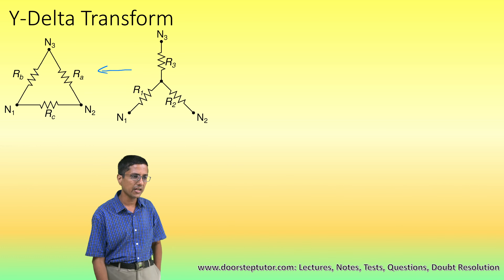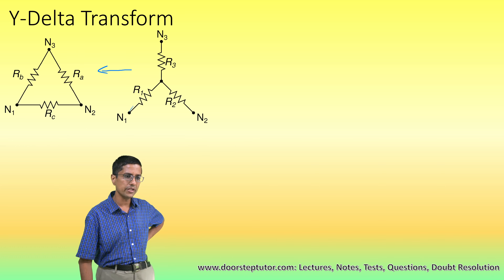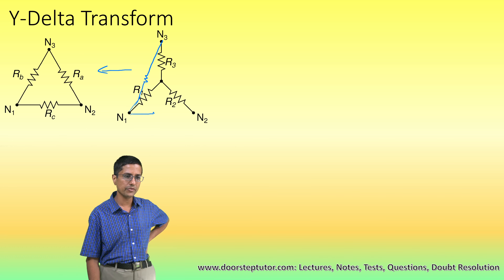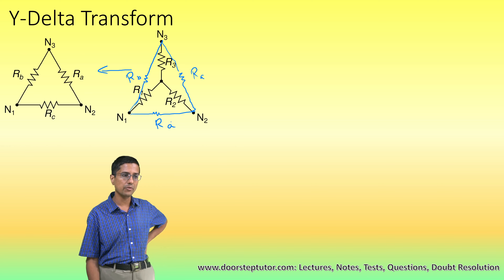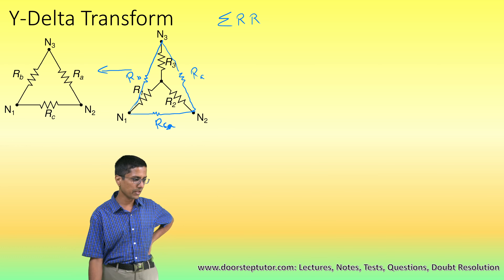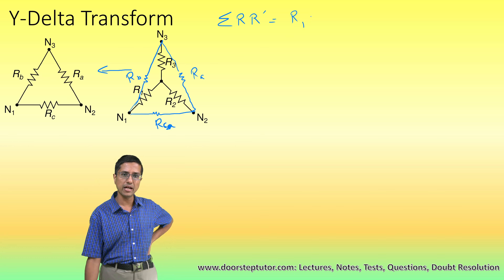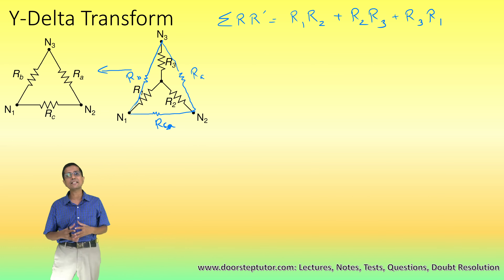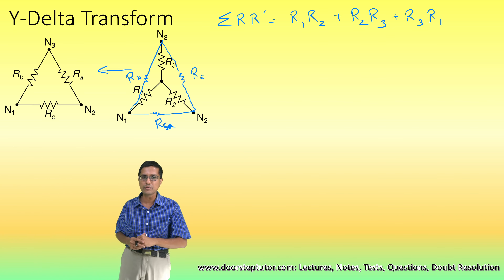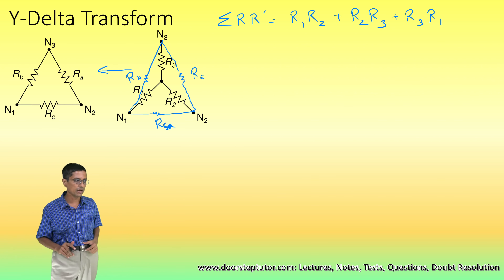Now let us go from star to delta. I draw the delta superimposed on the star, and I want to calculate values of Ra, Rb, and Rc in terms of R1, R2, and R3. I define R' as the sum of all possible pairwise multiplications of the three resistances: R2·R3 + R3·R1 + R1·R2. That is what R' is.